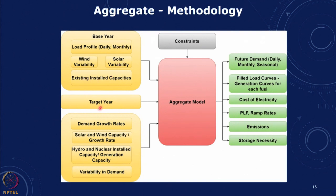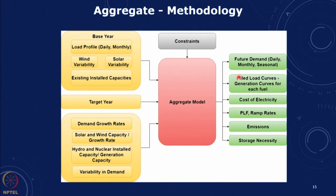Using this data, we projected for a target year using growth rates for load profile demand, solar and wind capacity, hydro and nuclear installed capacity, and variability in demand. With these constraints we obtained the future demand for different days by hours, daily, monthly, and seasonally, then tried to allocate based on thermal, hydro, and renewables to fill the load curve. Hydro was allocated to meet sudden requirements and all fast ramping up or down.